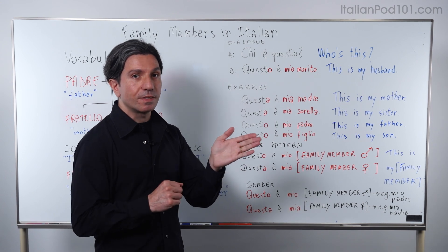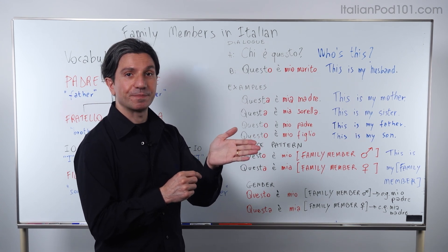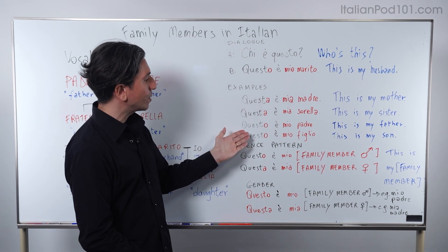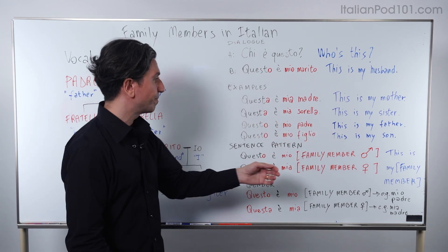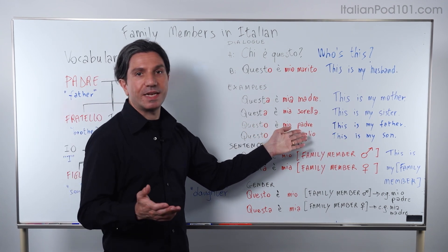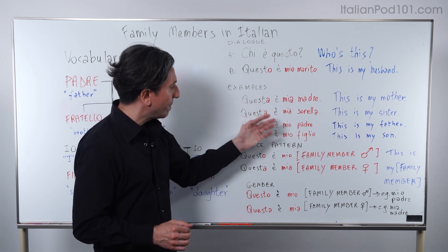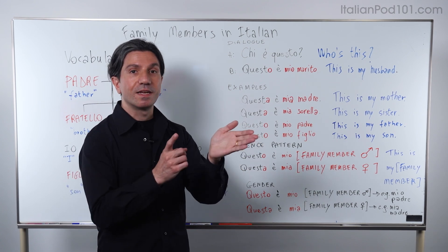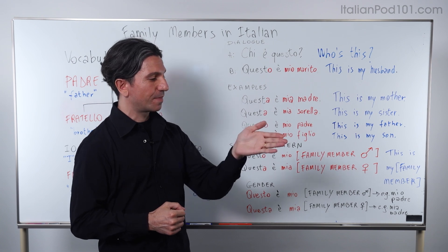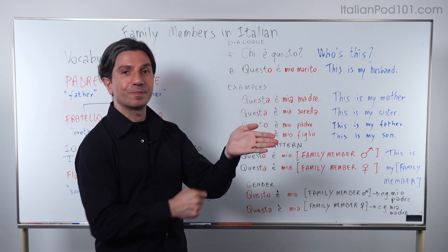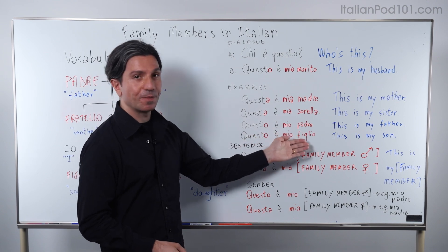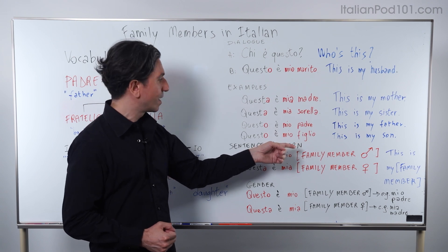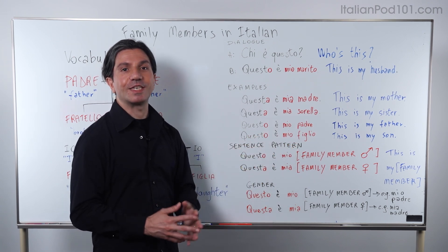Another picture — in this picture you can see your father. So you say: Questo è mio padre — This is my father. Padre is singular, masculine, so mio and questo are singular, masculine. The last one is son, so you say: Questo è mio figlio — This is my son. Figlio is singular, masculine, so mio and questo are singular, masculine.